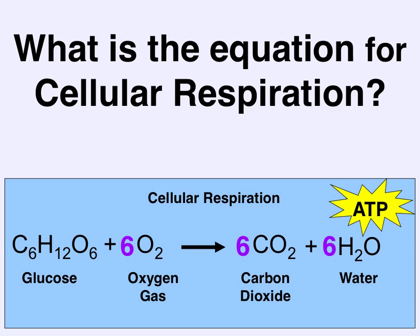If we abbreviate that in the chemical equation: glucose is C6H12O6. Oxygen gas is 6O2, meaning six molecules of oxygen gas. That is converted into six molecules of carbon dioxide and six molecules of water, and a bunch of ATP. I hope that you notice it looks very familiar — it looks much like photosynthesis, except it's the exact reverse. So: C6H12O6 plus 6O2 gets converted into 6CO2 plus 6H2O and ATP.